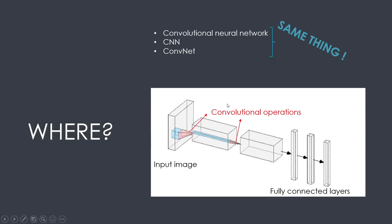As you can see here, I have one convolutional operation here, one here, and three fully connected layers. As soon as you have at least one convolutional operation, your model is a CNN.